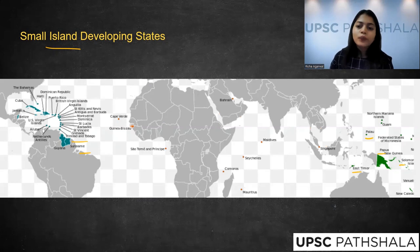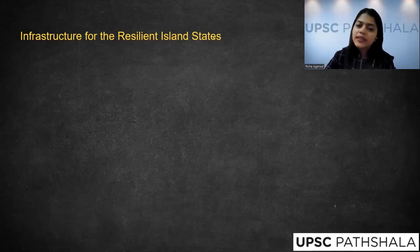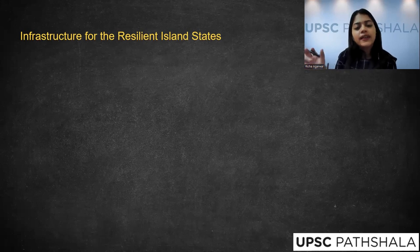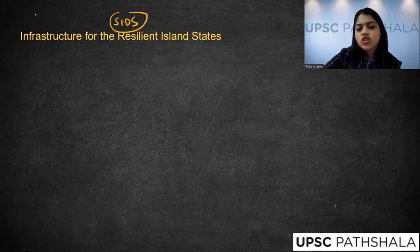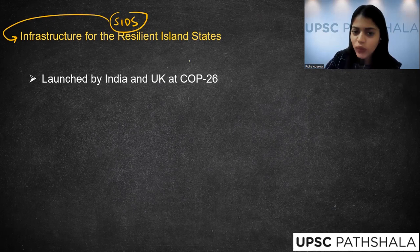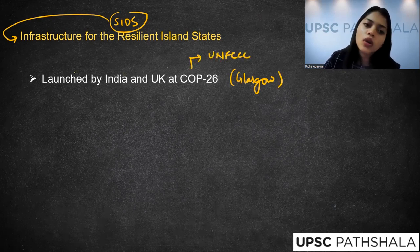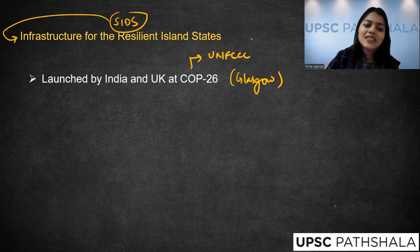So India launched an initiative called Infrastructure for Resilient Island States — IRIS. India said that to create disaster resilient infrastructure, we will first target these Small Island Developing States and encourage infrastructure development for them. This was launched by India and the UK at COP26 in Glasgow — the Conference of Parties to the UNFCCC.